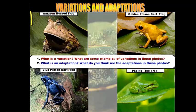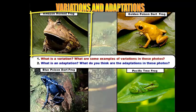Let's start with body color. The Amazon horned frog has browns, tans, dark browns, and some greens, which is beneficial because it lives on the ground floor of the rainforest. It acts as camouflage to blend in with the leaf litter — the pile of leaves sitting on the ground of the rainforest.